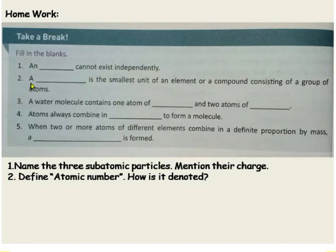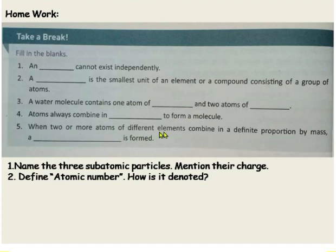A molecule is the smallest unit of an element or compound consisting of a group of atoms. A water molecule contains one atom of oxygen and two atoms of hydrogen. Atoms always combine in whole numbers to form a molecule. When two or more atoms of different elements combine in a definite proportion by mass, a molecule of a compound is formed.